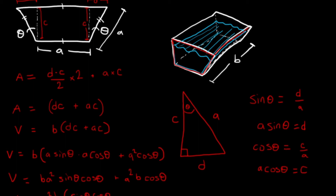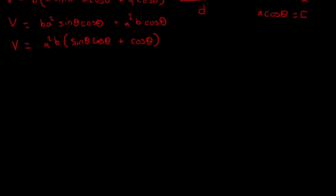We're trying to maximize the value of theta, so we take the derivative with respect to theta. Since the question allows us to leave the answer in terms of A and B, we treat A and B like normal constants. Taking dV/dθ: we pull out A²B as a constant and apply the derivative to the inside, which is sin θ cos θ + cos θ. We take the derivative of the first term using the product rule, then add the derivative of cos θ.